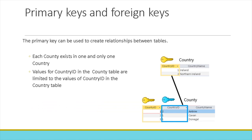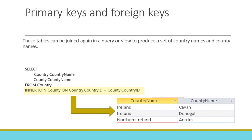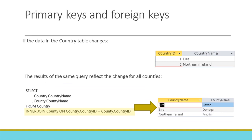So what are foreign keys? The primary key can be used to create relationships between tables, known as foreign keys. For example, we have a table of counties, and each county exists in one and only one country. We have a table of countries in which the country ID is the primary key. By establishing a foreign key relationship between country ID in the county table and country ID — the primary key of the country table — the values for country ID in the county table are limited to the values in the country table. These tables can be joined in a query or view to produce the set of country names and county names. If the data in the country table changes — for example, changing the name from the English name of Ireland to the Irish name — the results of the same query reflect the change for all counties.